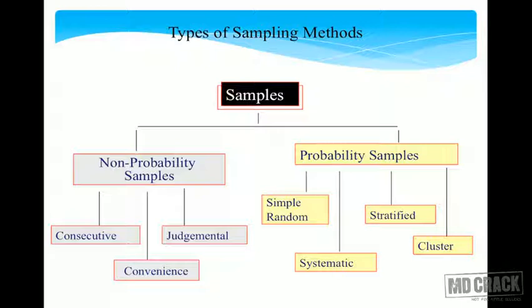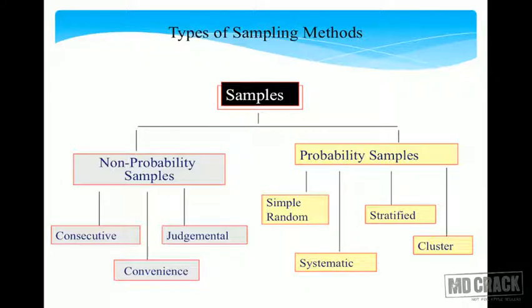There are basically two types of sampling: non-probability sampling and probability sampling. For practical purposes, what matters is probability sampling. Non-probability sampling is purposeful — not sampling in the truest sense, not random, and can be subjected to a lot of bias. Examples of non-probability sampling: consecutive sampling (enrolling patients as they come to a clinic), convenience sampling (choosing people based on ease of inclusion), and judgmental sampling (choosing based on disease characteristics).